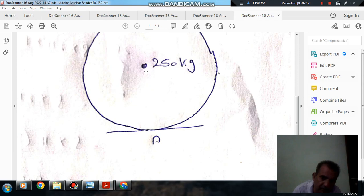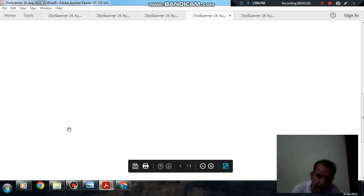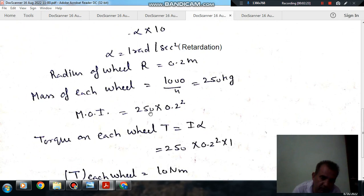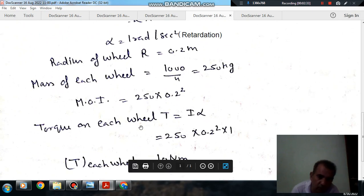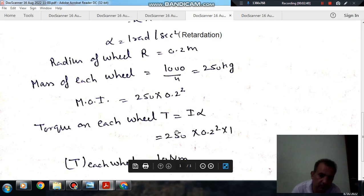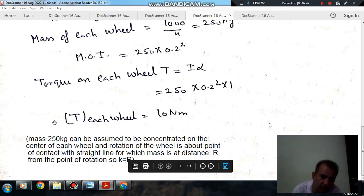So, the radius equals the radius of gyration - radius of wheel equals radius of gyration. Moment of inertia will be mass into radius squared, that is 250 into 0.2 squared. So, torque on each wheel T is I into alpha, and I is 250 into 0.2 squared. And alpha is 1, so braking torque is 10 Nm, which equals 250 times 0.2 squared times 1.